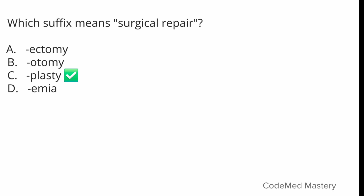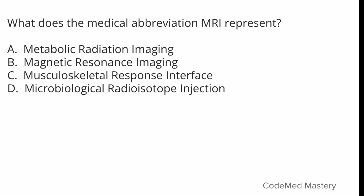Next question: what does the medical abbreviation MRI represent? Option A: Metabolic Radiation Imaging, Option B: Magnetic Resonance Imaging, Option C: Musculoskeletal Response Interface. The right answer is Option B: Magnetic Resonance Imaging. MRI is a non-invasive imaging technique used to produce detailed images of the organs and tissues in the body.